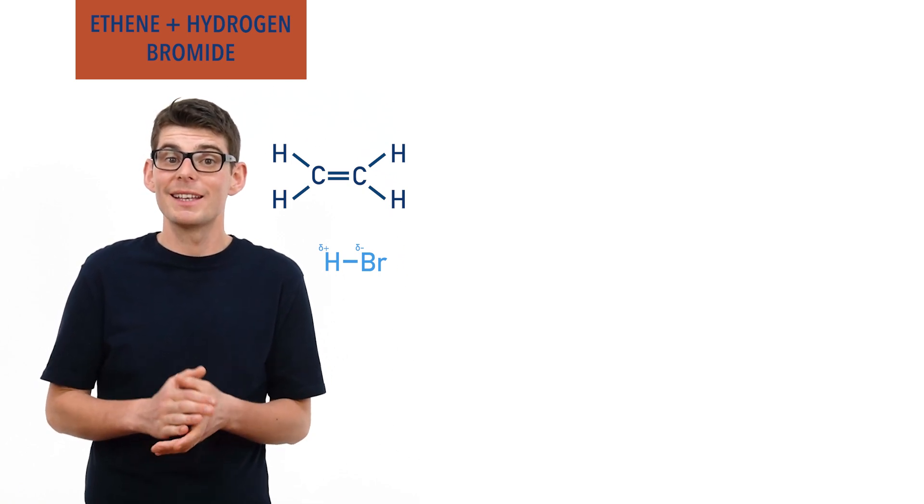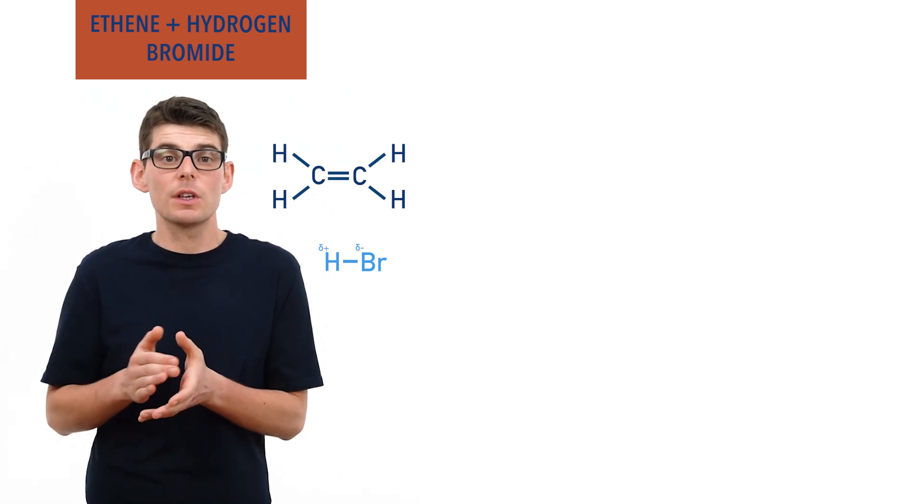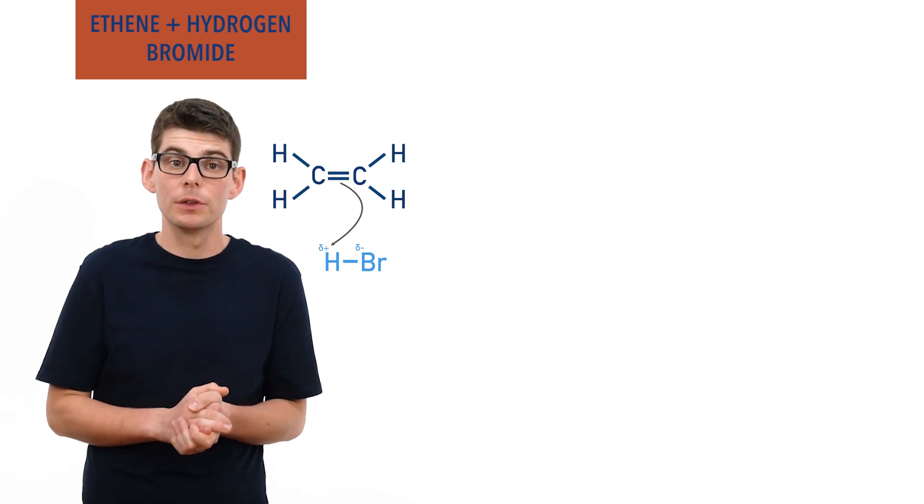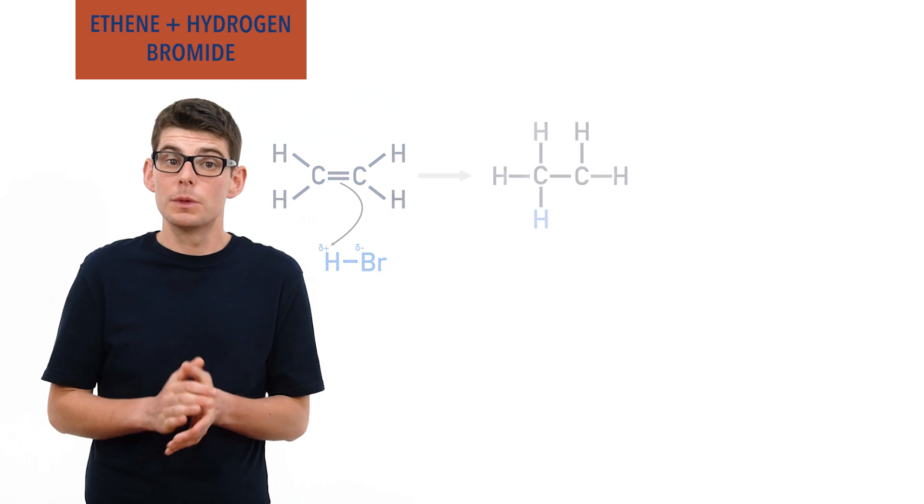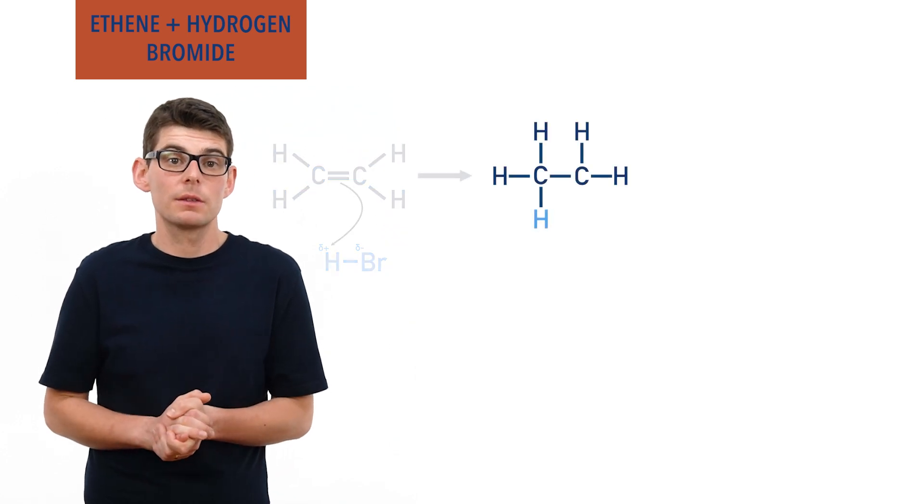is able to act as an electrophile and accept a pair of electrons from the pi bond in the double bond in ethene. A new bond gets formed between one of the double bonded carbon atoms and the hydrogen.